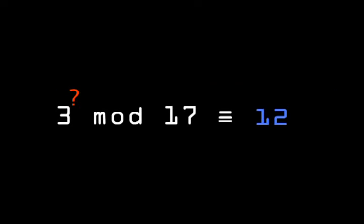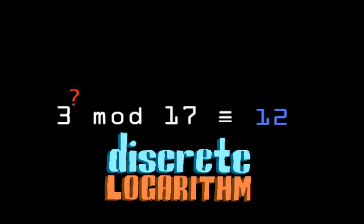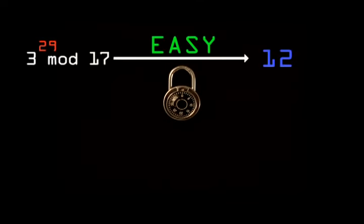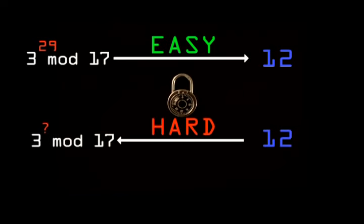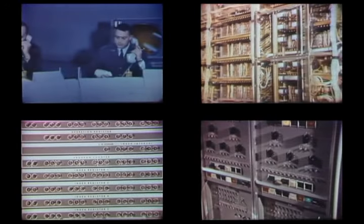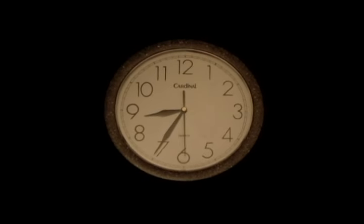Now, the reverse procedure is hard. Say, given 12, find the exponent 3 needs to be raised to. This is called the discrete logarithm problem. And now we have our one-way function — easy to perform, but hard to reverse. Given 12, you would have to resort to trial and error to find the matching exponent. With small numbers it's easy, but if we use a prime modulus which is hundreds of digits long, it starts to get seriously hard. Even if you had access to all the computational power on Earth, it could take thousands of years or more to find the answer. So the strength of a one-way function is based on the time needed to reverse it.